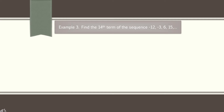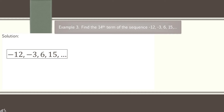Example 3: find the 14th term of the sequence negative 12, negative 3, 6, and 15. Make sure to identify the proper value of the common difference. The first term, a sub 1, is negative 12. The sequence is increasing toward positive values: negative 12 plus 9 is negative 3, negative 3 plus 9 is 6, and 6 plus 9 is 15. So d equals positive 9.